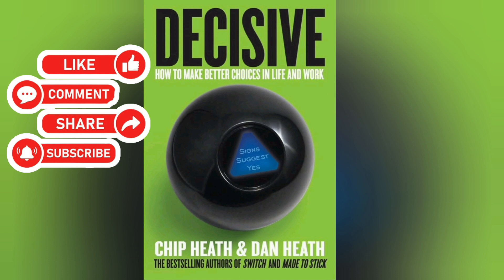The central thesis of Decisive revolves around the idea that we often fall victim to common decision-making pitfalls that can lead to poor choices. To combat this, the authors introduce a framework known as the WRAP model, which stands for Widen Your Options, Reality Test Your Assumptions, Attain Distance Before Deciding, and Prepare to be Wrong. Let's break down each component of the WRAP model.